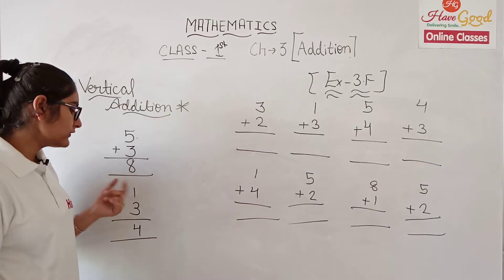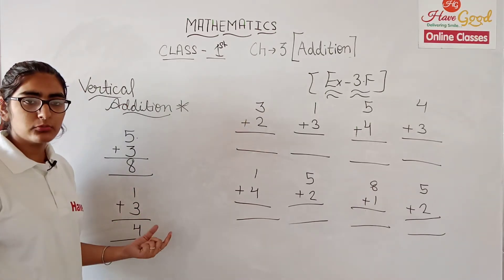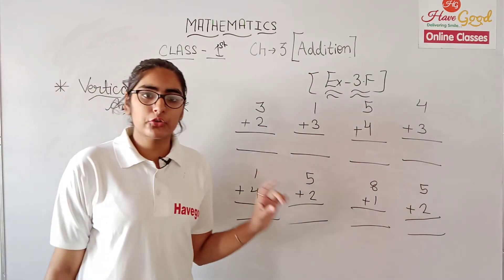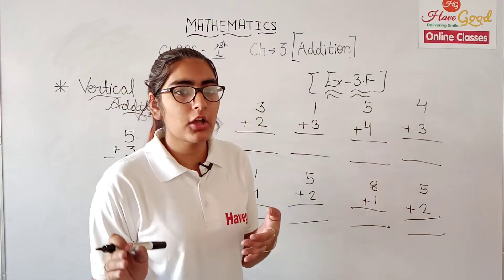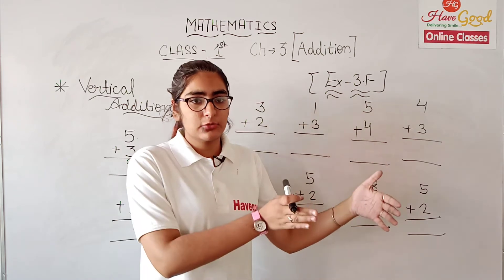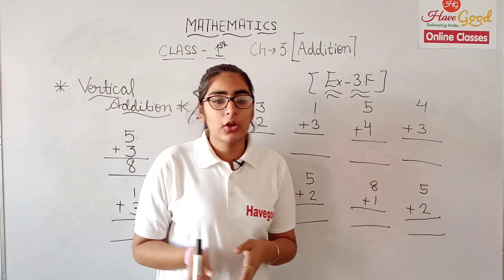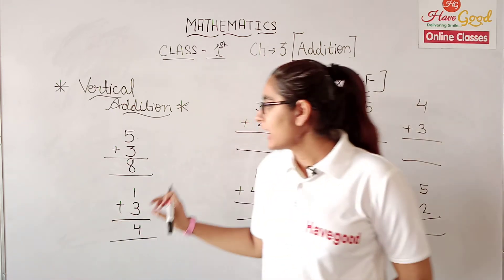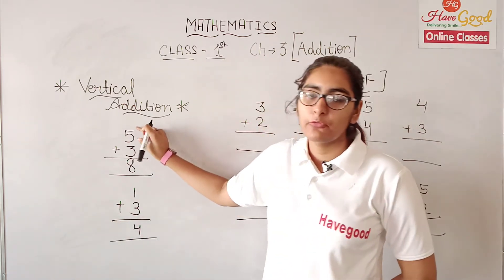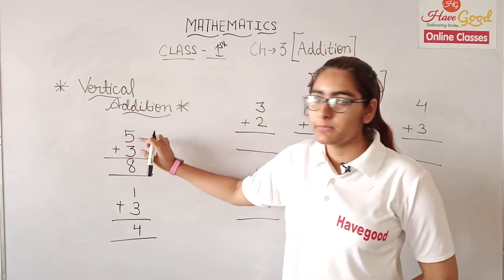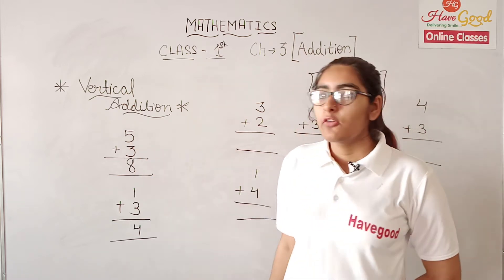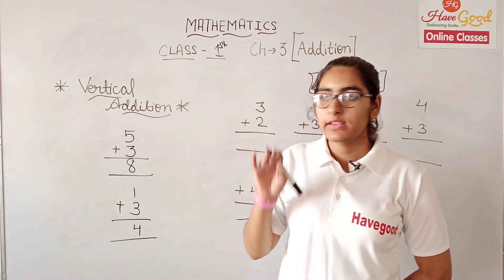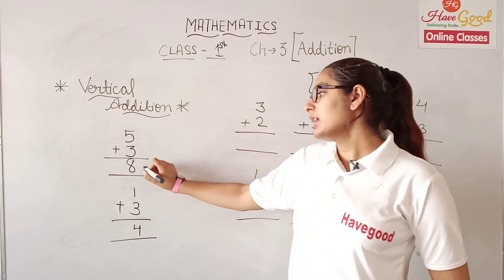If you want to do vertical addition, it is easy. For vertical addition, the numbers are placed vertically. Let's take 3 plus 2, then 5 plus 2, then 4, 6, 7, 8.